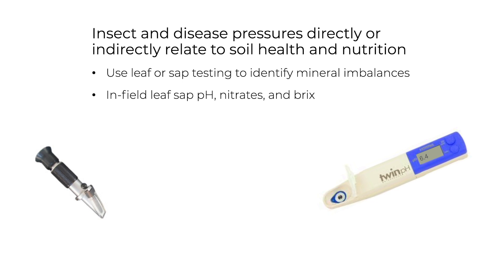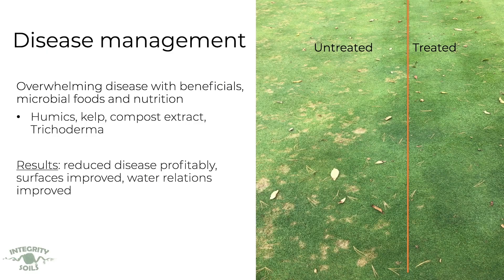Send off leaf samples and do sap testing to identify any potential mineral imbalances, and look at how you can do foliar applications perhaps in the transition so that you're lifting plant nutrition and not seeing those same insect and disease pressures — so you can drop the nematocides, fungicides or pesticides and support plant health. One strategy to overwhelm diseases is to apply beneficial microbial foods and nutrition: put down beneficial organisms like trichoderma, feed a diversity of microbiology through your humic acids, kelp, and compost extracts.